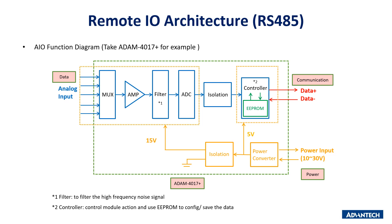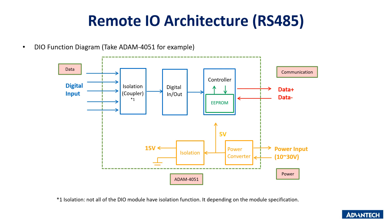For the ADAM-4017+, because it needs power to activate the module, it also has a power input section — please refer to the yellow part wiring. For the digital Remote I/O module, using the ADAM-4051 as an example, digital data enters through the data part. For isolation I/O modules, the data passes through an isolation coupler, then to digital input/output IC, and then to the controller. EEPROM is used to configure and save data, and finally RS-485 communication sends the data to the computer.